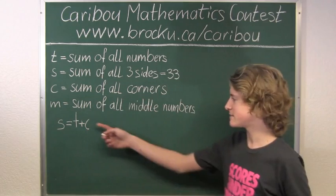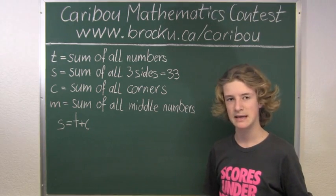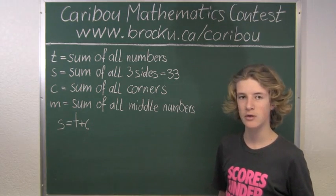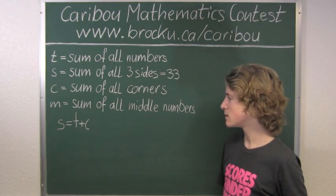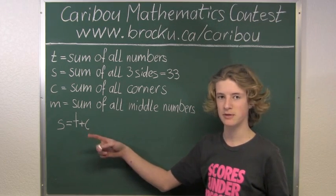Now the reason why we have c added on is because, like I said in the beginning, each corner value is added twice when adding up all three sides. So now we have s equals t plus c.